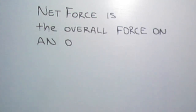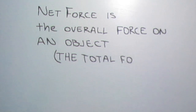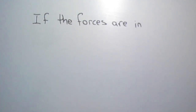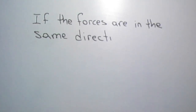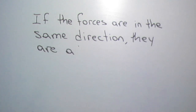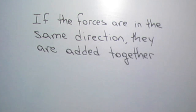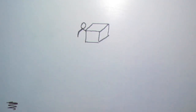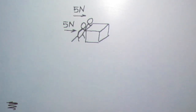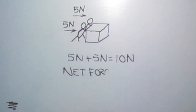A net force is the overall force acting on an object. Think of it as the total force. When forces are in the same direction we add the forces together in order to calculate the net force. In the next example you can see that there are two people pushing on a box. If one person is pushing with five newtons and another person is pushing with five newtons, then we add the two forces together. Five newtons plus five newtons gives us ten newtons and the box will move towards the right.